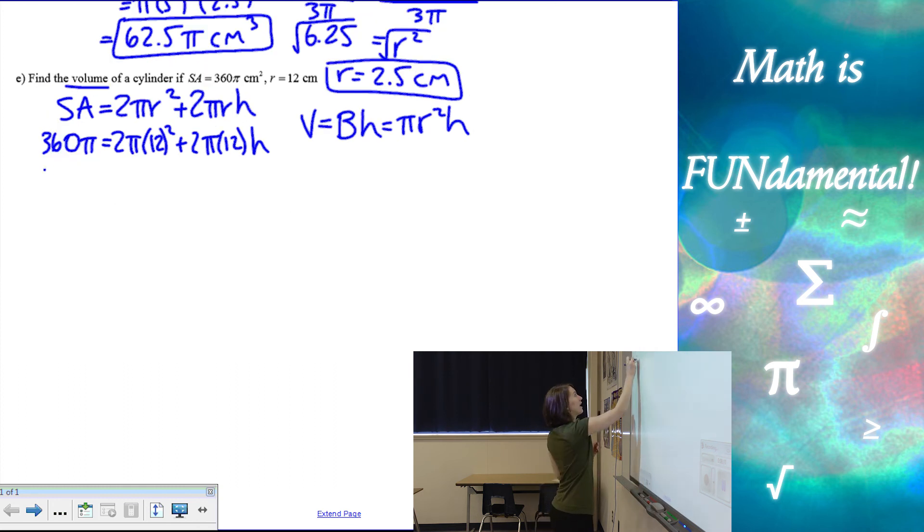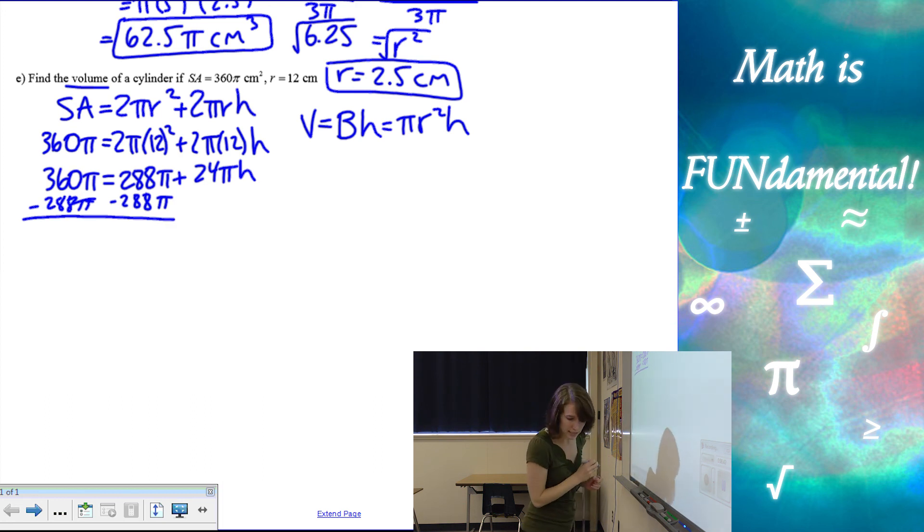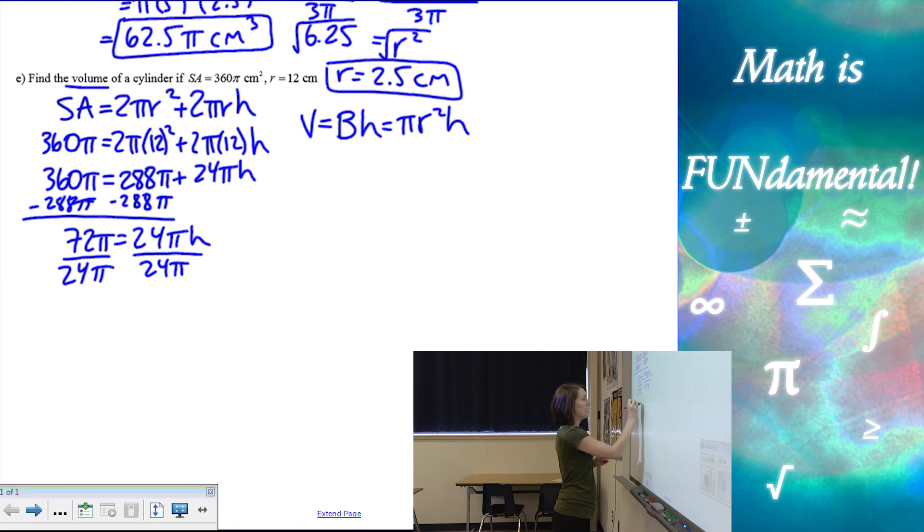So let's solve this. We've got 360 pi equals 144 times 2 is 288 pi plus 24 pi times h. So let's move over anything that doesn't have an h. We're going to subtract 288 pi. And 360 minus 288, 72 pi equals 24 pi h. Divide to get h by itself. And h is going to be 3. Well, that worked out nicely.